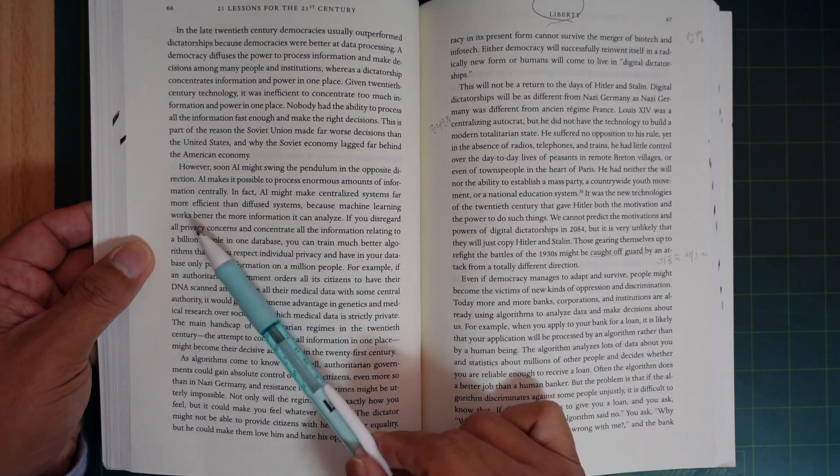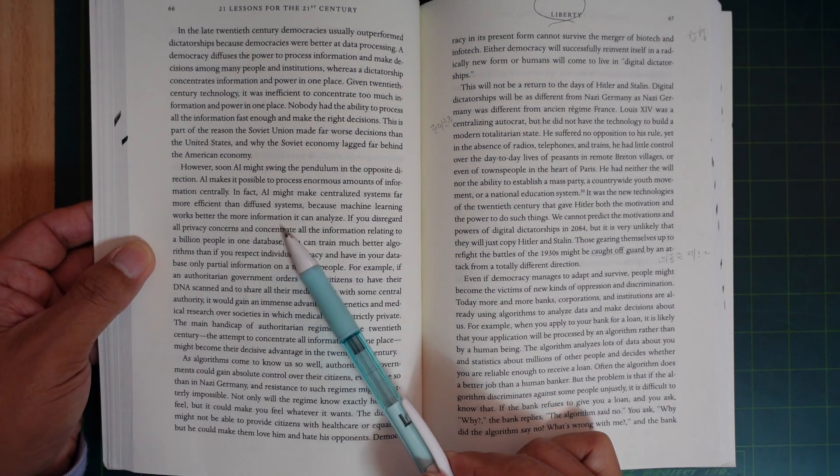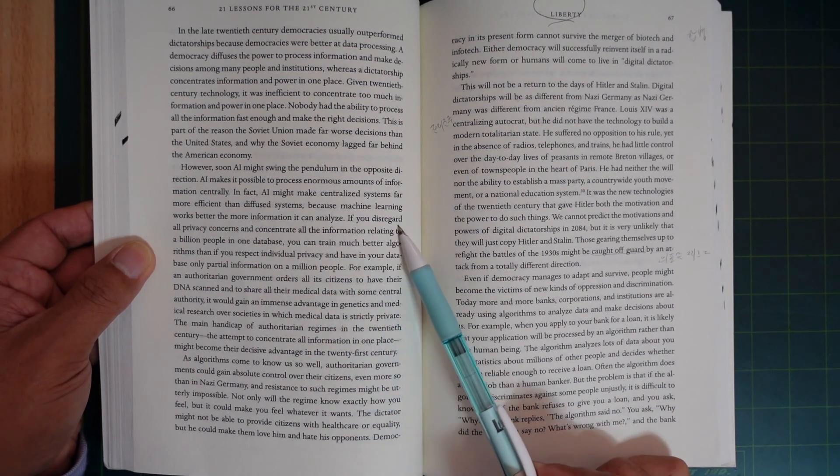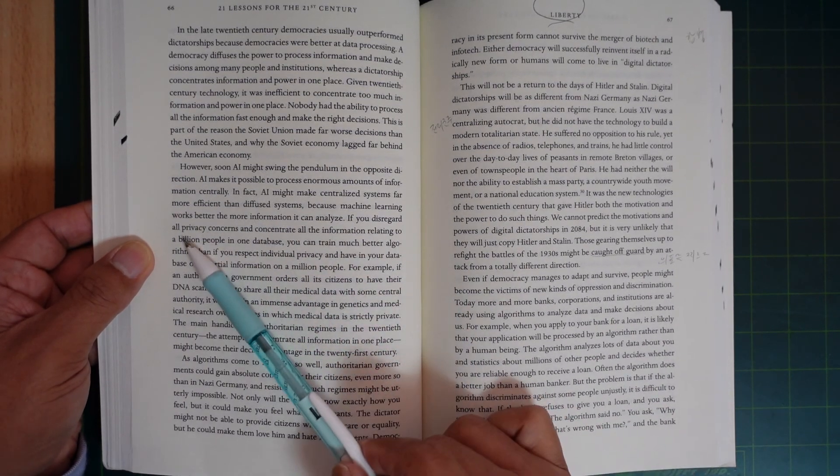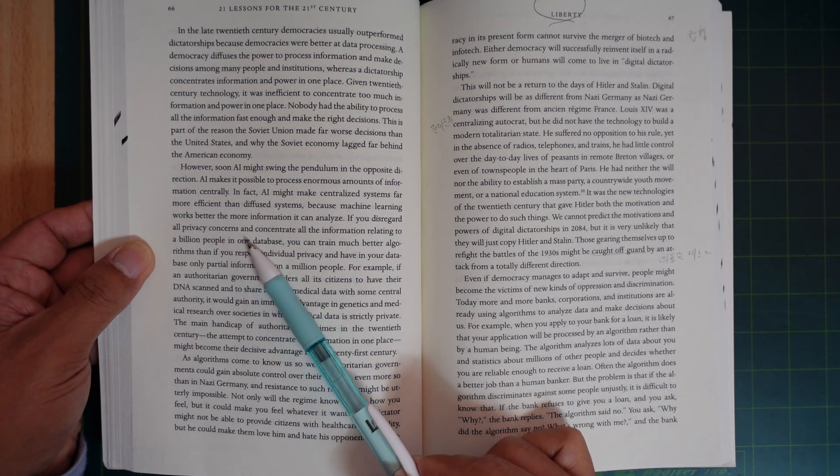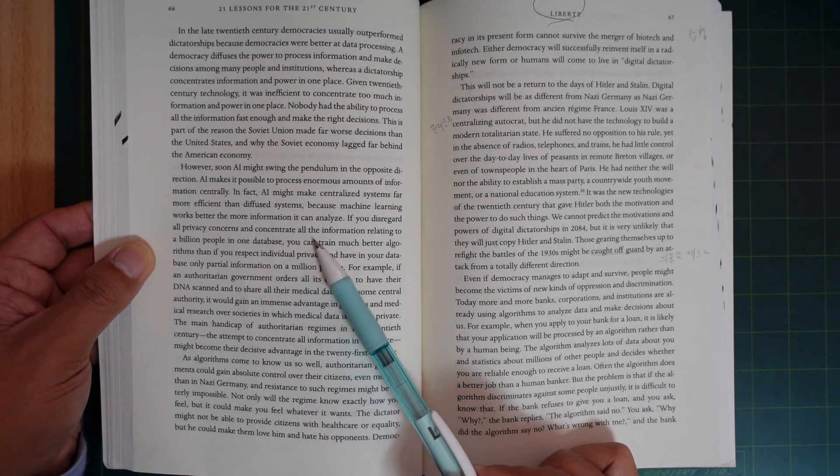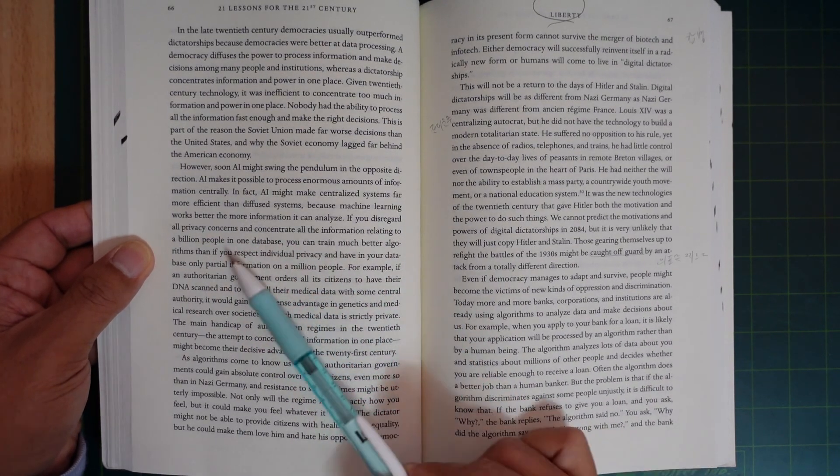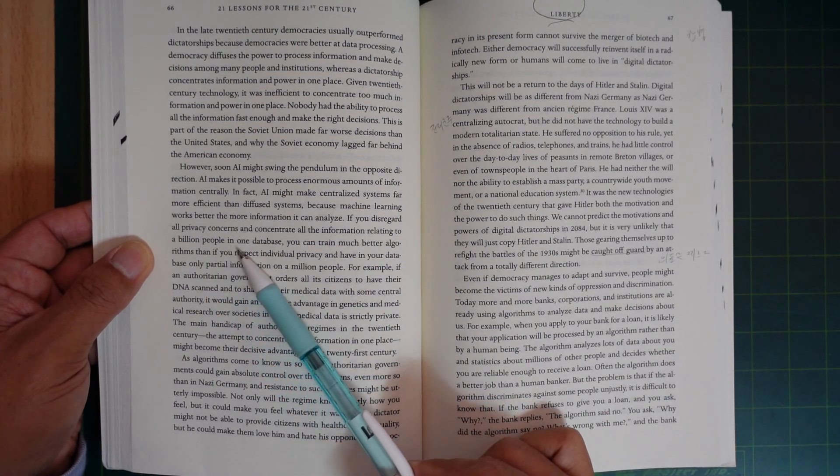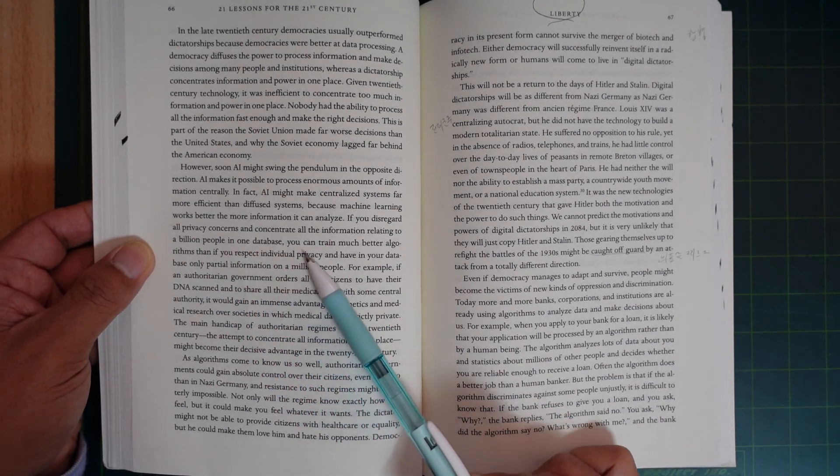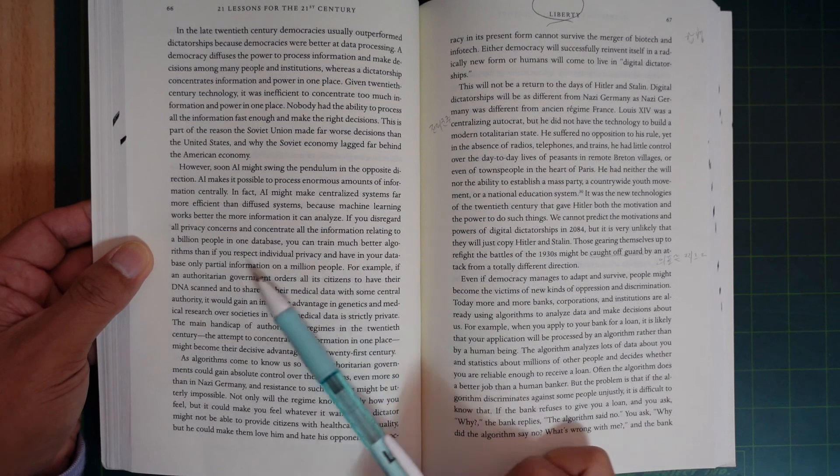Because machine learning works better the more information it can analyze. If you disregard all privacy concerns and concentrate all information relating to billions of people in one database, you can train much better algorithms.